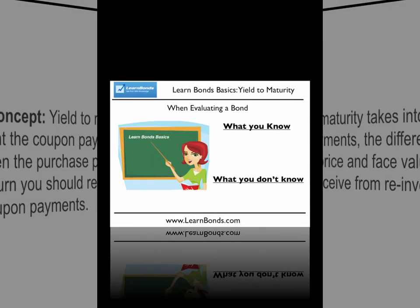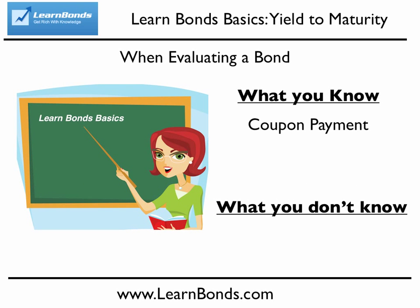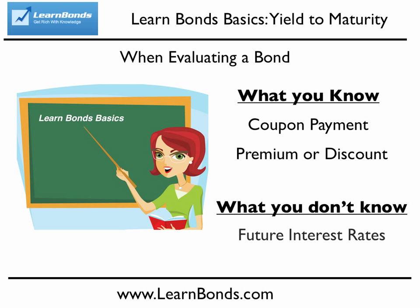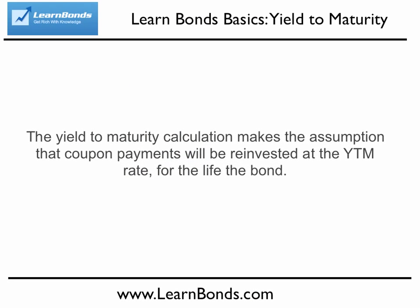When evaluating a bond, you will always know what the coupon payment of the bond is, as well as the difference between the purchase price and the face value of the bond. However, as no one knows what interest rates will be in the future, there is no way to know what rate an investor will receive when reinvesting their coupon payments. This is a large dilemma because one of the major benefits of investing in bonds is the power of compounding, and if you leave out the return from reinvesting coupon payments, a large portion of the actual return you should realize is missing.